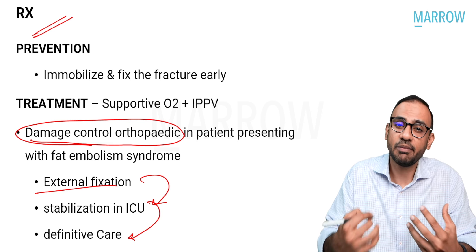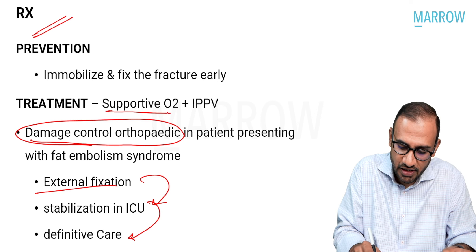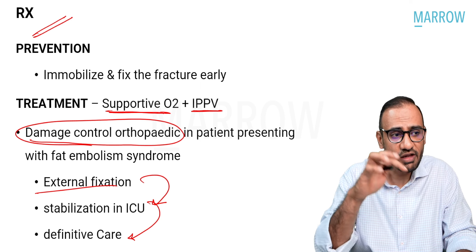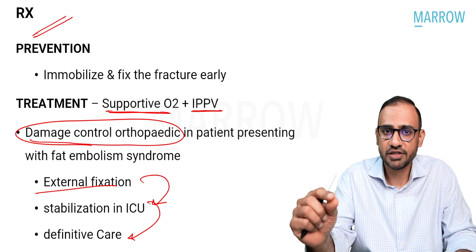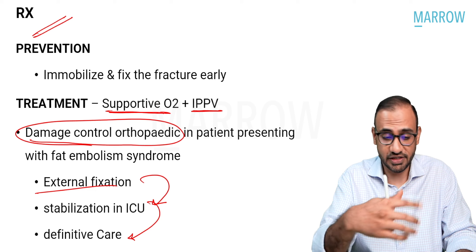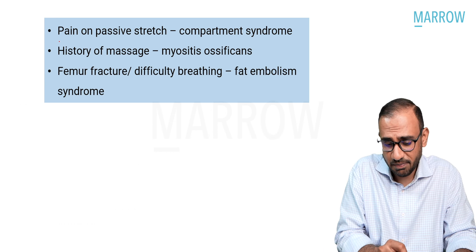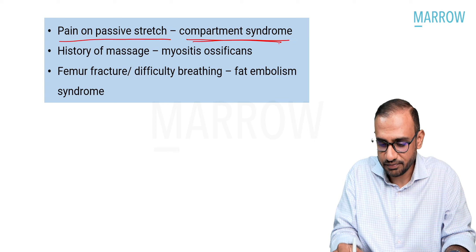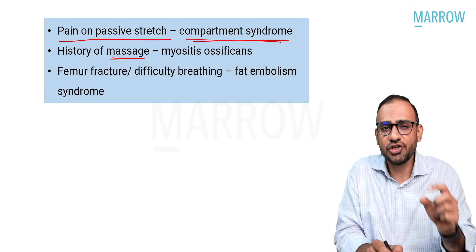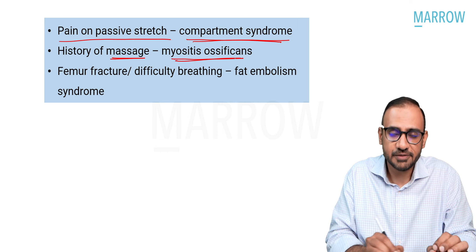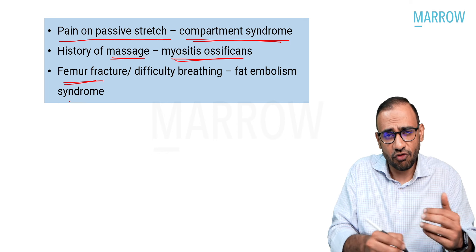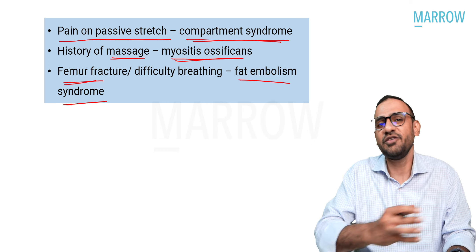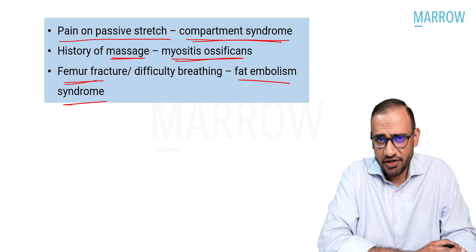Key diagnostic keywords in orthopedics: pain on passive stretch — think compartment syndrome; history of massage following trauma — think myositis ossificans; long bone or femur fracture followed by difficulty breathing and petechial rashes — think fat embolism syndrome. These keywords help you make the diagnosis quickly.